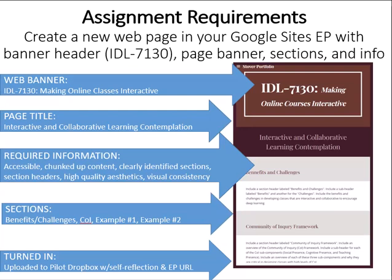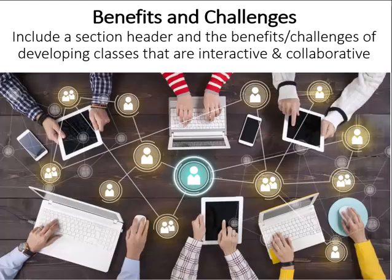You need to have sections that include Benefits and Challenges, Community of Inquiry, Practical Inquiry Model, Example One, and Example Two. To receive credit, it needs to be uploaded and turned in to your Pilot Dropbox with a self-reflection and your electronic portfolio URL.